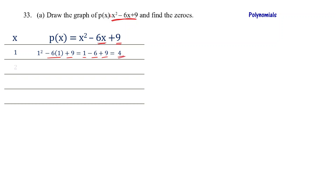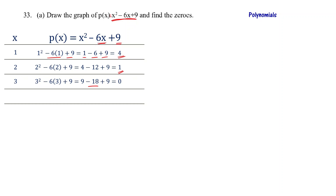Now taking x = 2: p(2) = 2² - 6×2 + 9 = 4 - 12 + 9 = that is equal to 0.